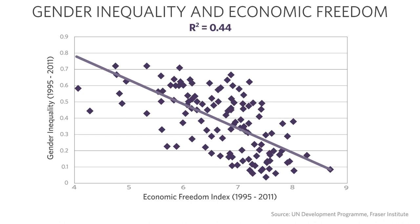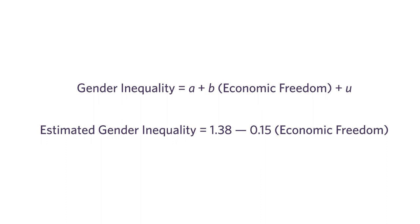Another thing to look at is the value of parameter B — a parameter being a value in the regression model we calculate rather than observe directly. This value of negative .15: what does it mean? On average — there are exceptions — a one unit increase in economic freedom is associated with a .15 unit decline in gender inequality. So parameter B, with the value of negative .15, is telling me about the magnitude of the relationship between economic freedom and gender inequality.